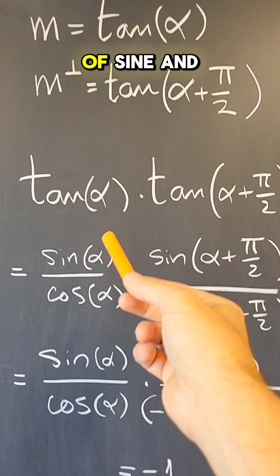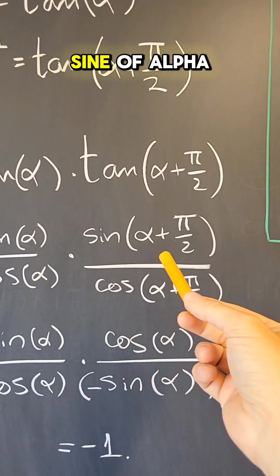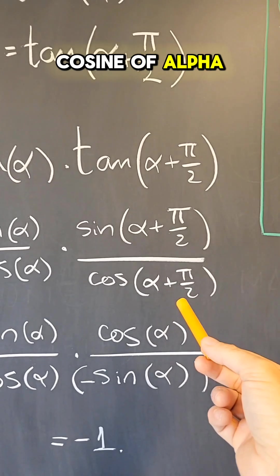If we rephrase this in terms of sine and cosine, I get this is the sine of alpha, cosine of alpha, sine of alpha plus 90, cosine of alpha plus 90.